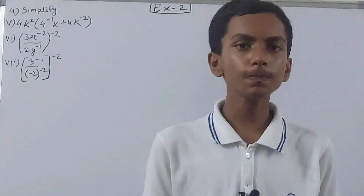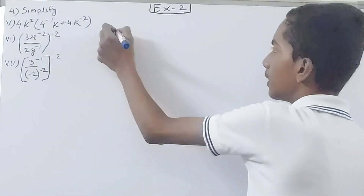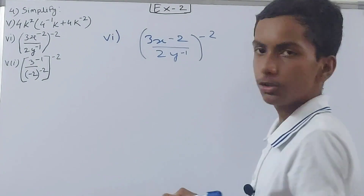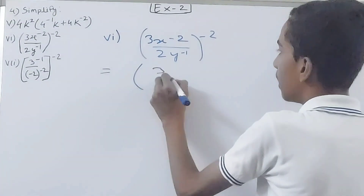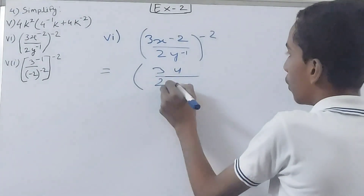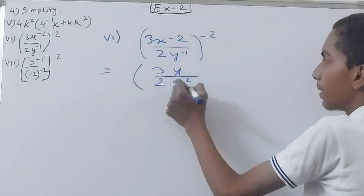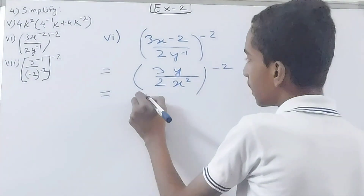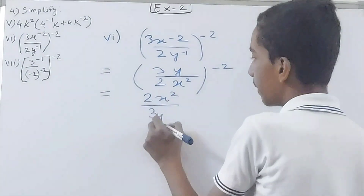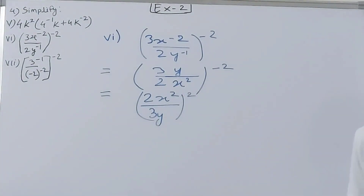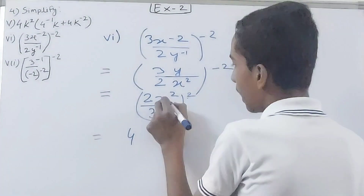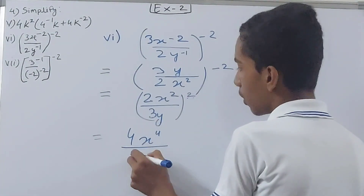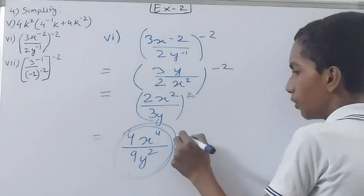The sixth part is 3x to the power minus 2 upon 2y to the power minus 1, whole to the power minus 2. First simplify inside: y minus goes up and x to the power minus 2 comes down, giving 3y upon 2x² to the power minus 2. Reciprocating for the outer minus 2: we get 2x² upon 3y, whole squared. That gives 2² is 4, x² squared is x⁴, over 3² is 9 and y² — so the answer is 4x⁴ upon 9y².